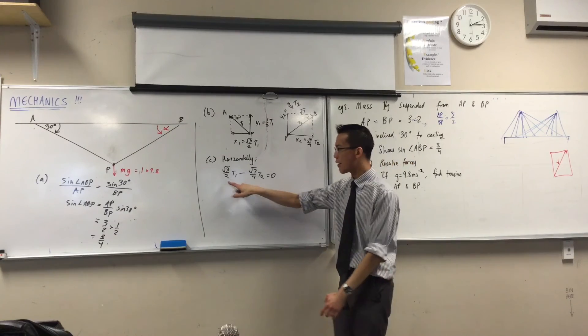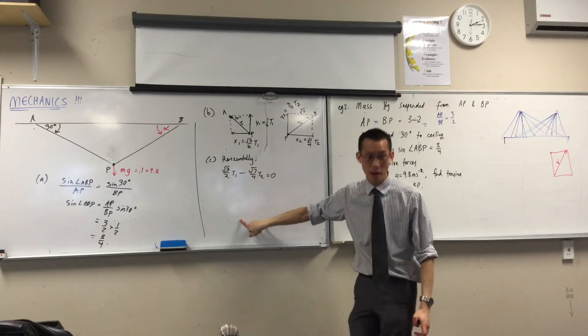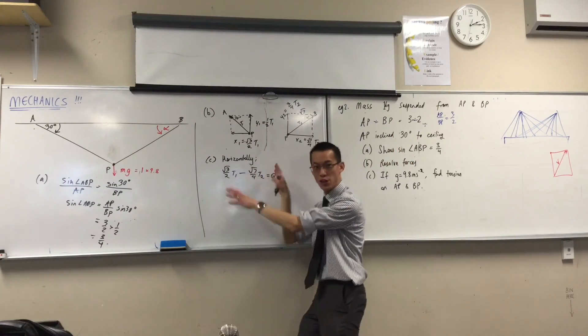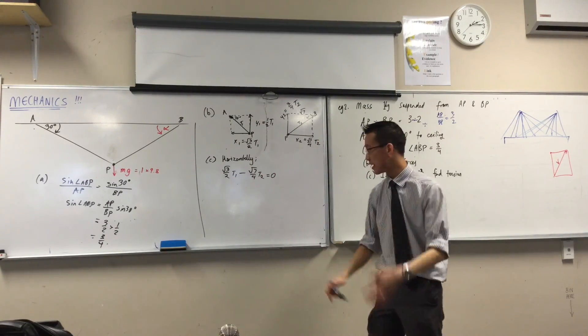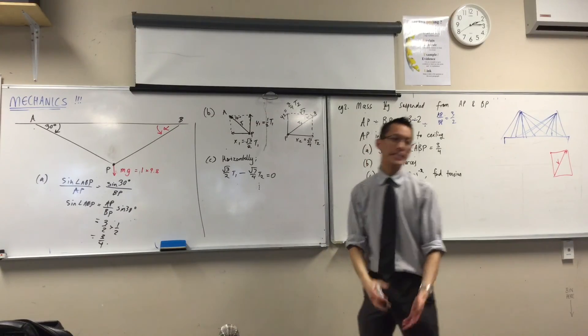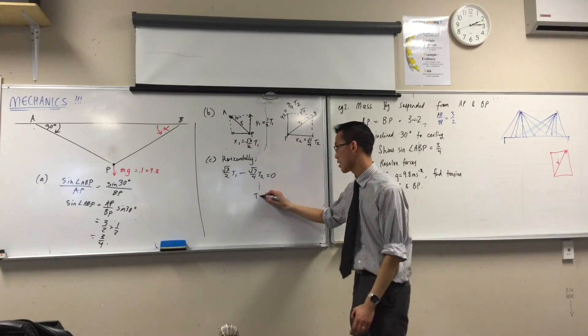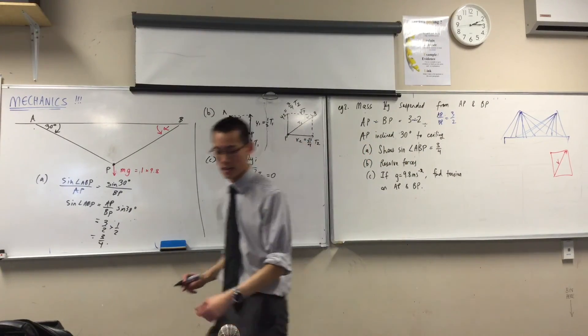I think substitution is going to be more useful. Elimination, remember, the way it works is I've got a pair of coefficients here and another pair of coefficients here, and I just need to fiddle with them to make them the same. I don't want to fiddle with these guys, they look disgusting. So I might as well put in a little bit of extra work. Let's make T1 the subject. Can you make T1 the subject for me? Get it in terms of T2.